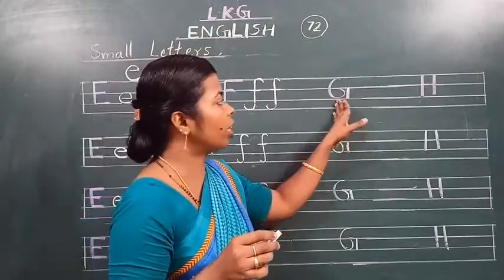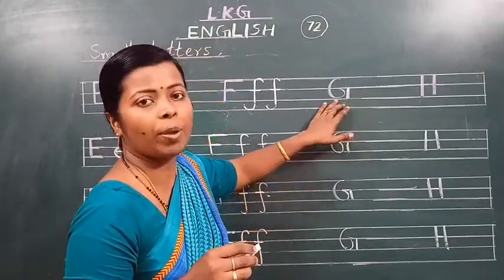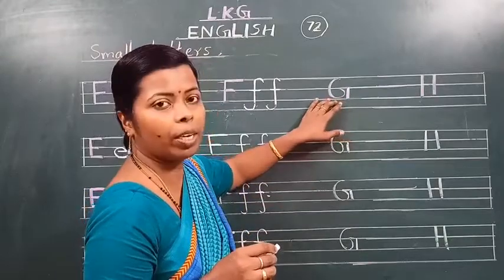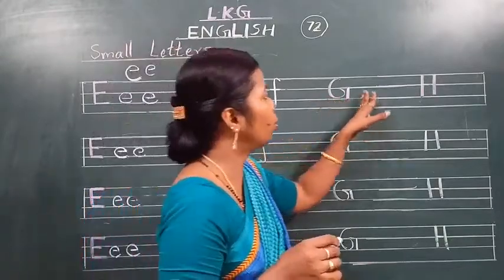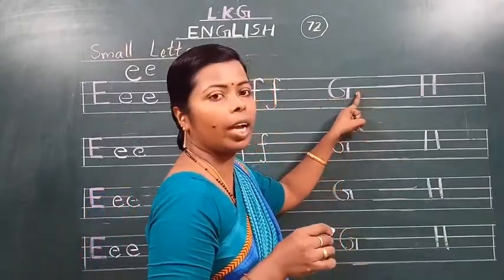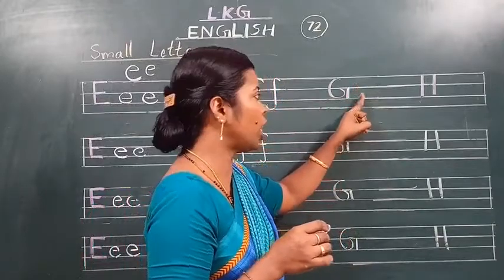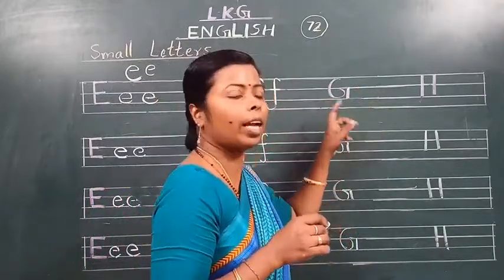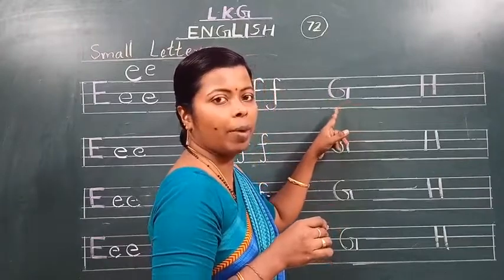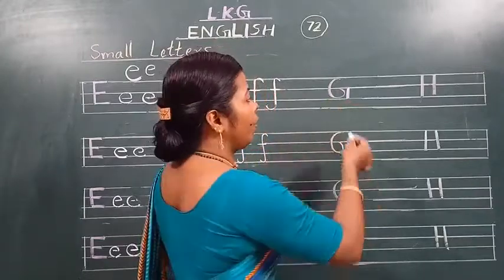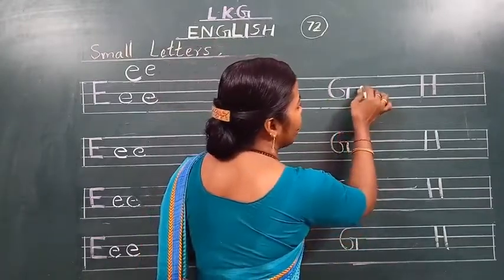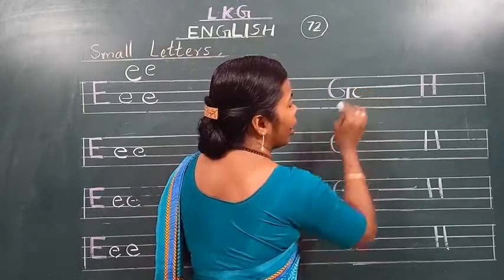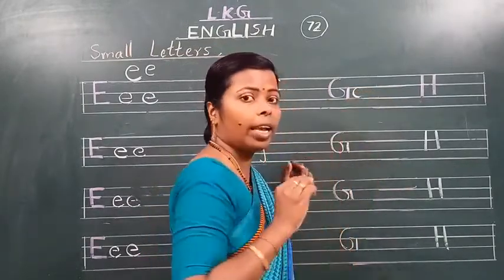Then next — which letter is this? This is capital letter G. Okay, this is capital letter G. Ab bol ho — idhar hum kya likhenge? Small letter G likhenge. Okay, kya aapko padha hai? Kaisa likhna hai small letter G? Malum hai? Very good. Ab bol ho, kaisa likhenge hum? Curve banayenge — dekho yahan dekho sabko.